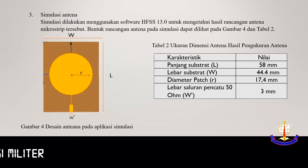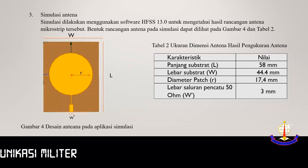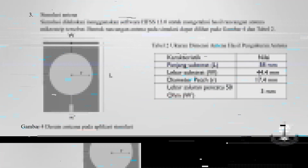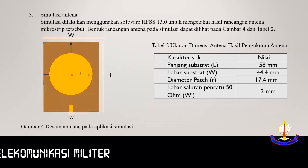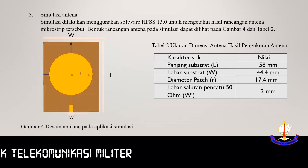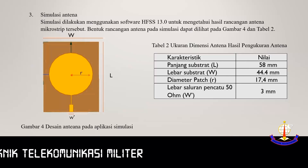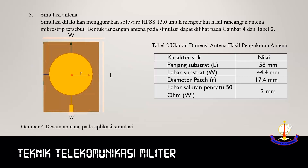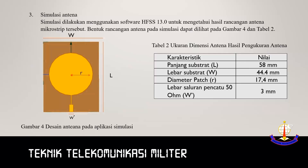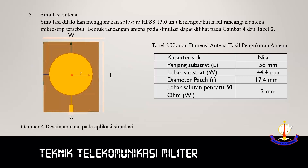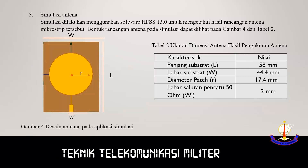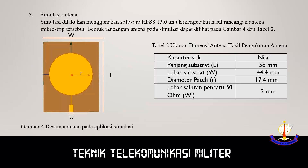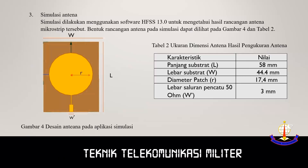Selanjutnya tahap simulasi. Simulasi dilakukan untuk mengetahui hasil rancangan antena. Simulasi dilakukan dengan menggunakan software HFSS 13.0. Ini adalah gambar desain antena pada aplikasi simulasi, dengan panjang substrat 58 mm. (Next is the simulation stage, performed to verify the antenna design using HFSS 13.0 software. This is the antenna design view in the simulation application, with substrate length 58 mm.)